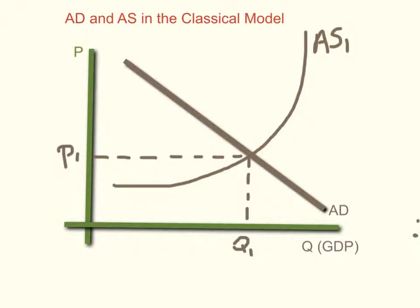Classical economists did not think that the government should increase its spending, lower its taxes, or increase the money supply to artificially stimulate the economy. They did admit that would stimulate the economy in the short run, but because of all the disadvantages it creates in the long run — inflation, increasing national debt, and so forth — they did not necessarily support that. Instead, they emphasized encouraging supply by increasing savings, promoting a positive business climate, keeping taxes relatively low, and keeping regulations reasonable.